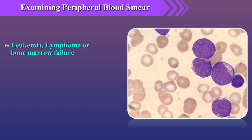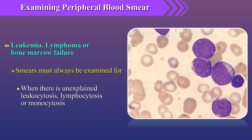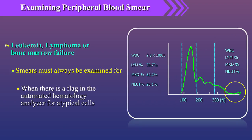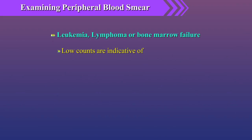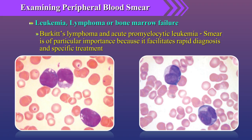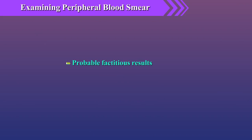In leukemia, lymphomas, or bone marrow failure, smears must always be examined for atypical cells or blasts when there is unexplained leukocytosis, lymphocytosis, or monocytosis, or when there is a flag in an automated hematology analyzer for atypical cells. Low counts are indicative of aplastic anemia, acute leukemia, hairy cell leukemia, myelodysplastic syndrome, or infiltration of non-hematopoietic malignant cells into the marrow. For two conditions — Burkitt's lymphoma and acute promyelocytic leukemia — the smear is of particular importance as it facilitates rapid diagnosis and specific treatment.